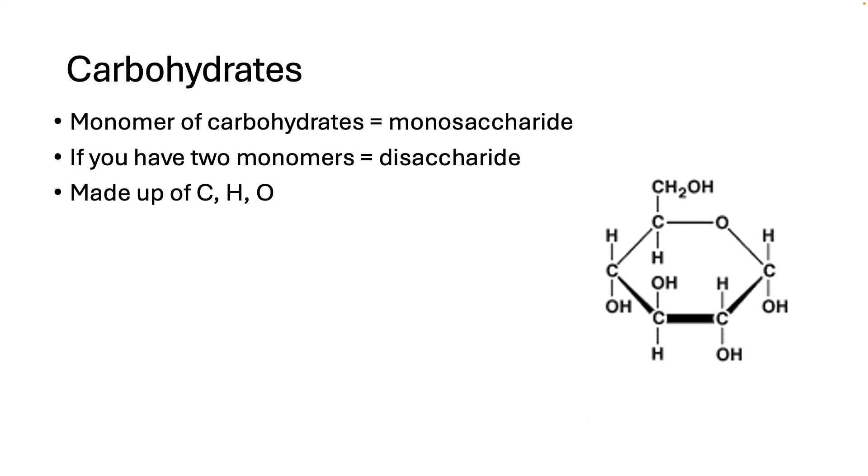But there are several different types of monosaccharides. For example, fructose, which is the type of sugar you find in fruit. Two monosaccharides linked together gives you something called a disaccharide. Di meaning two. Some famous disaccharides are lactose, which is the sugar found in milk, and sucrose, which is table sugar.